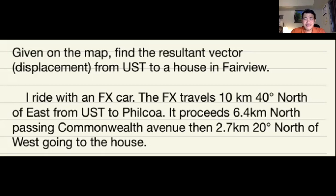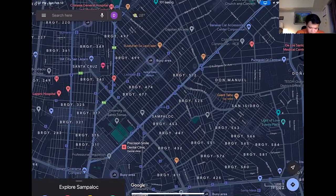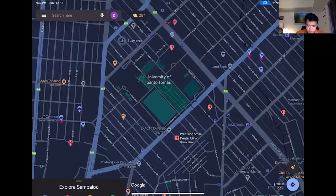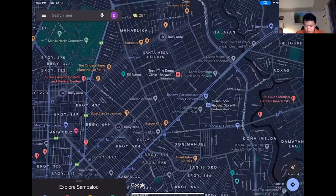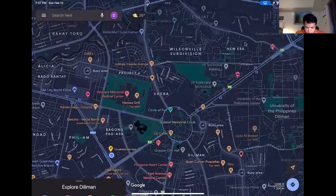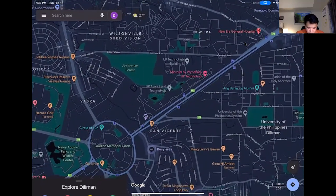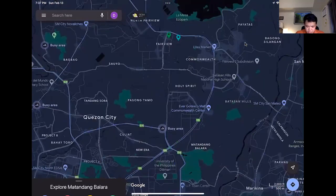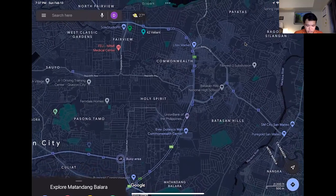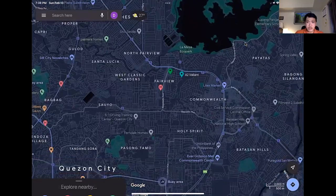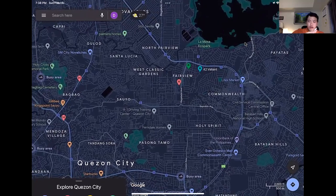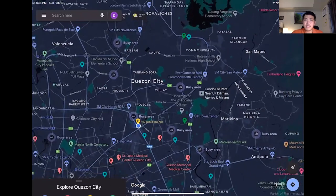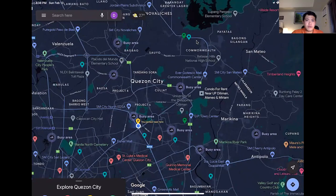Are you ready? I'll show you now the map. From UST here—University of Santo Tomas—the FX travels approximately a straight line up to Philcoa. I think somewhere here. And then there's another vector. We can assume it's a straight line along the Commonwealth, so it's a rough approximation actually. And then going to the village, there's another vector that's somewhere going north of west. Let us—I measured it.